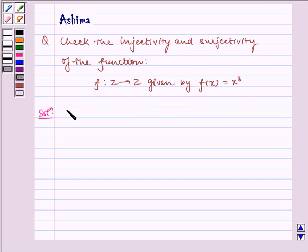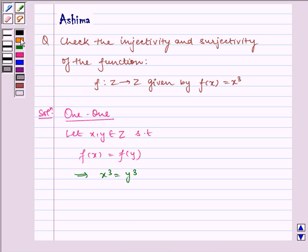Now let us write the solution. Let us check for one-one first. Let x, y belongs to Z such that f(x) is equal to f(y), which implies x³ is equal to y³. On taking cube root, it implies x is equal to y.